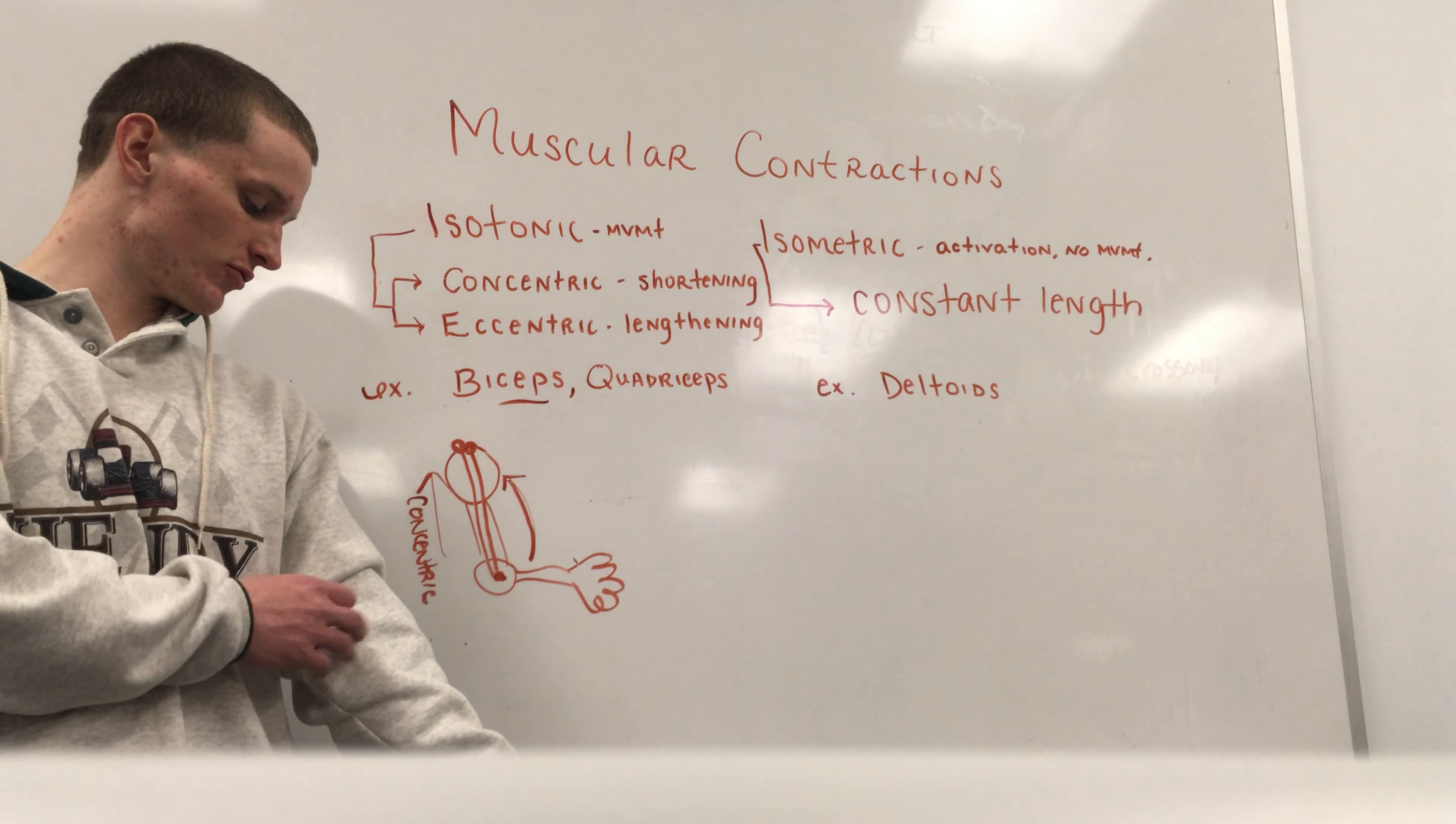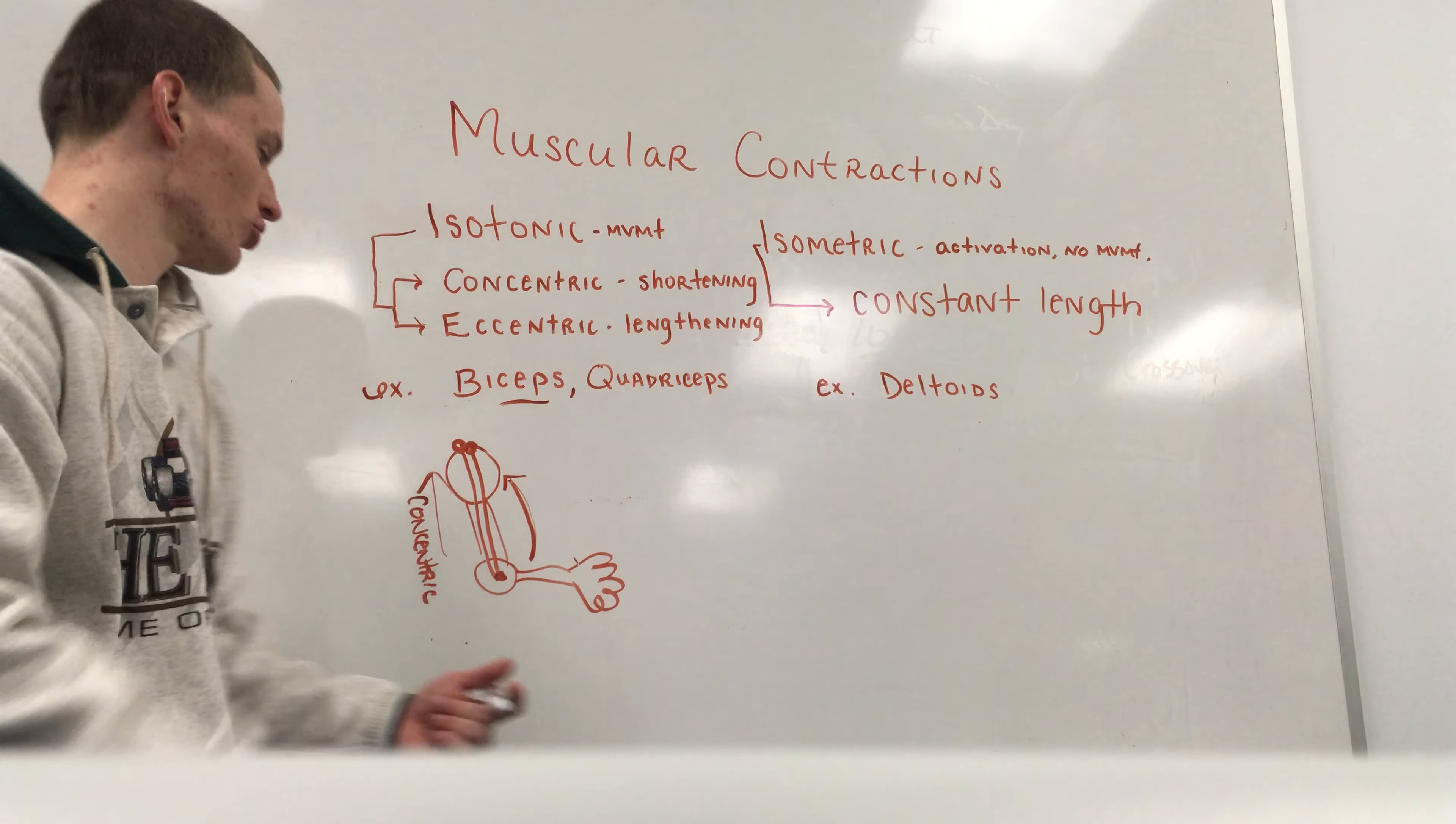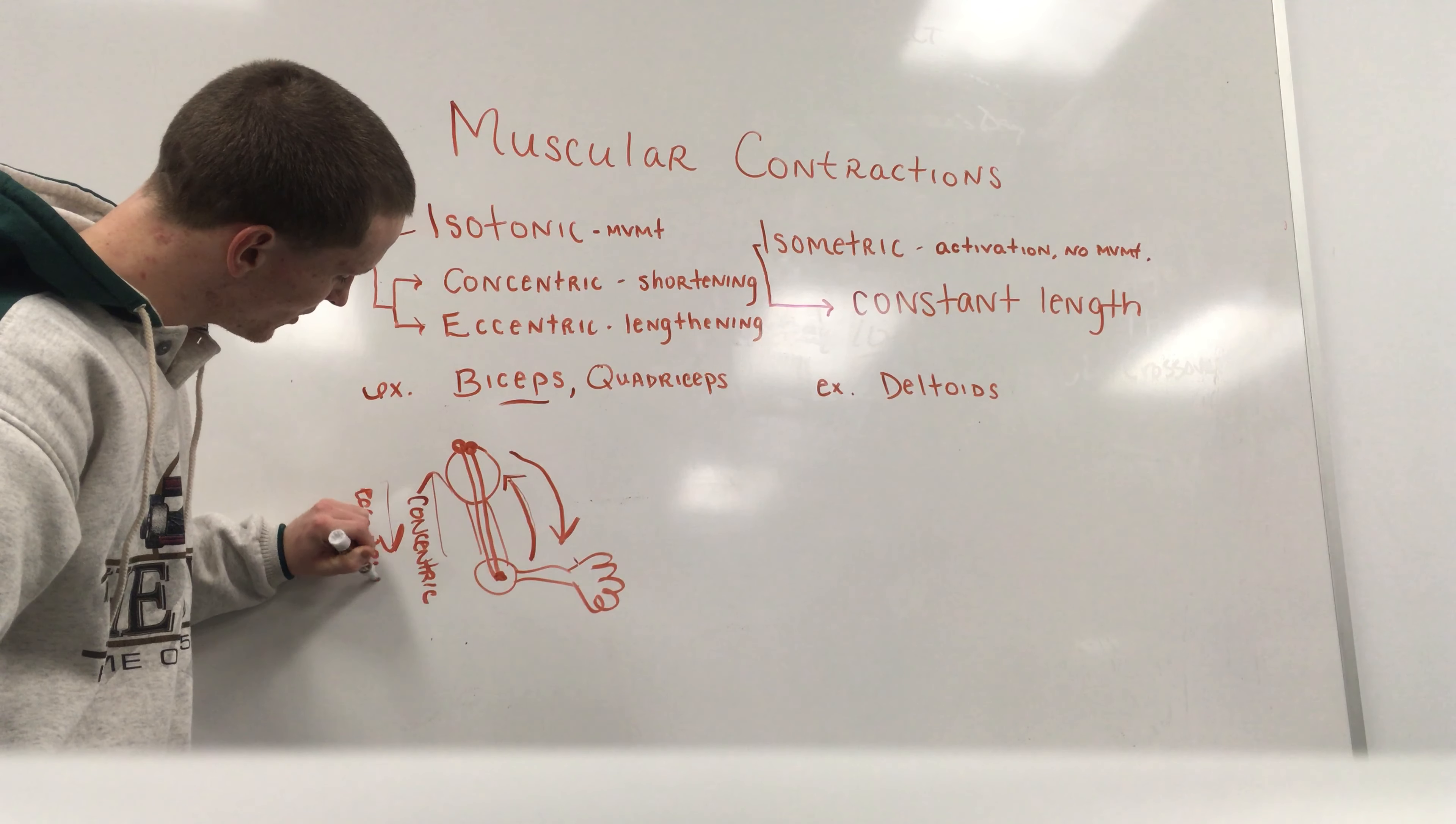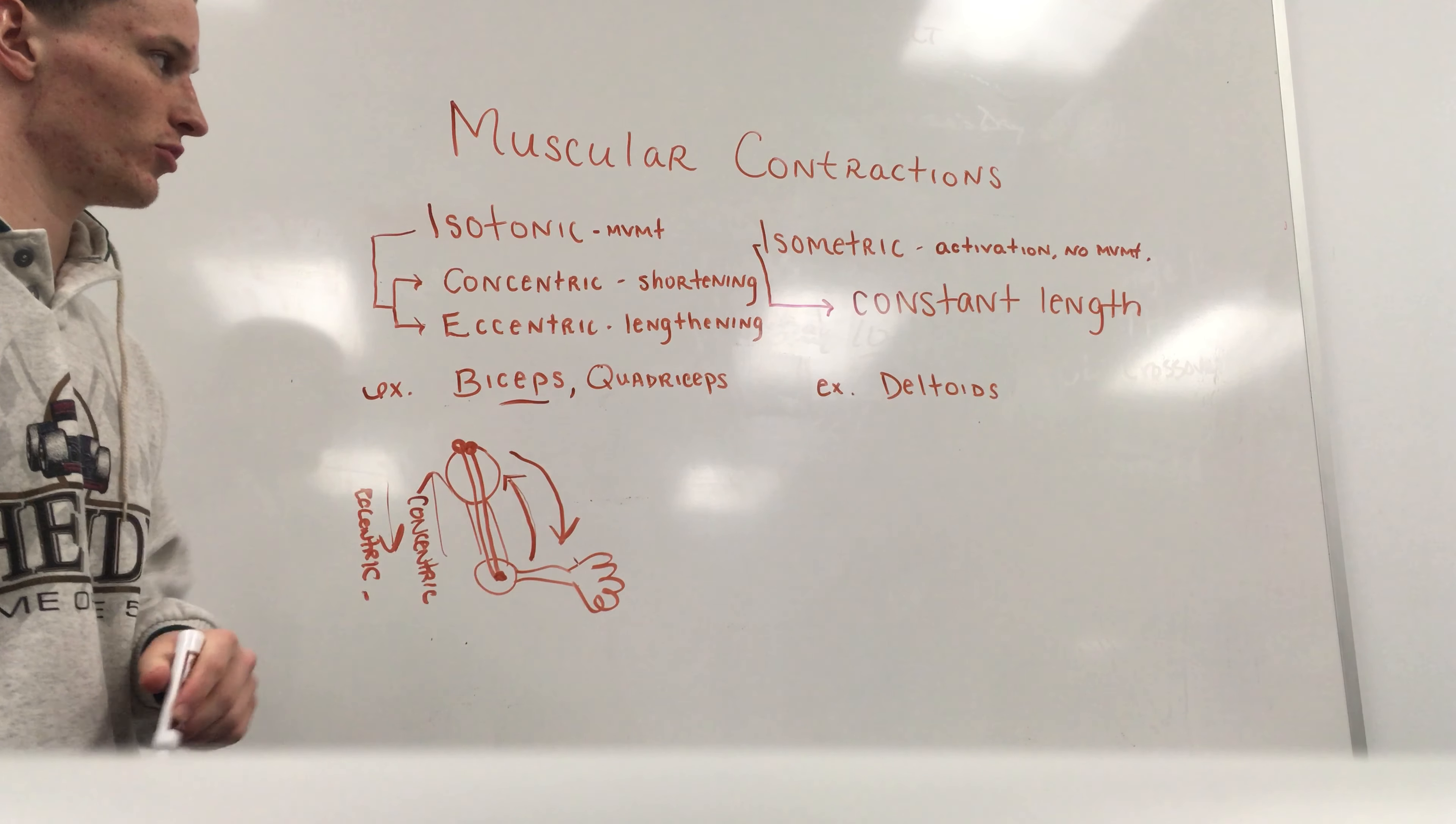That insertion at the radius and at the fascia of the forearm is getting further away from that origin up in the shoulder. Further away, lengthening, eccentric contraction. So that's the difference between concentric and eccentric contractions, and a quick little example with the biceps.